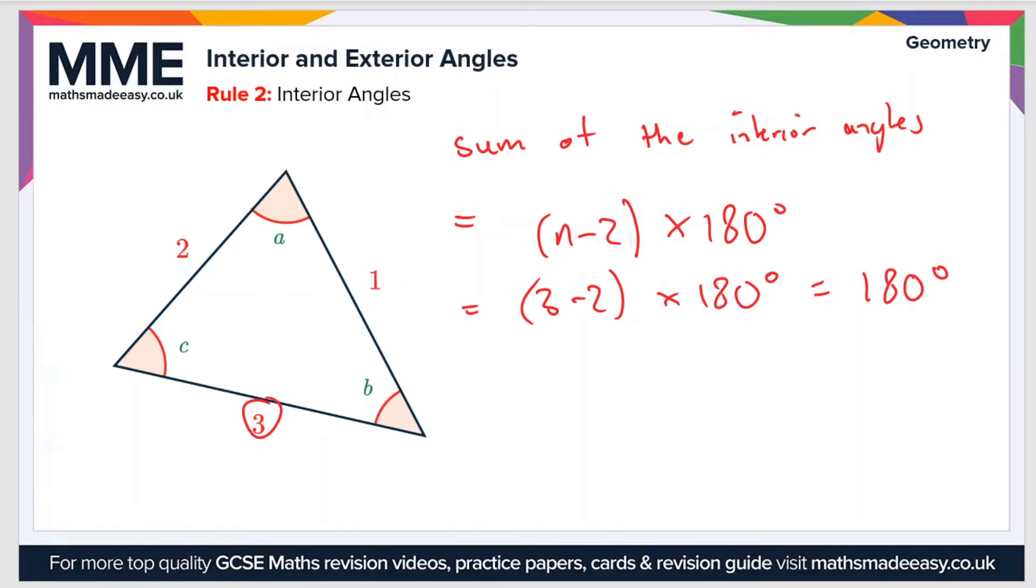So what does that mean? It means that a plus b plus c in the diagram equals 180 degrees. Now this rule is not specific to regular polygons.